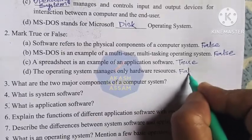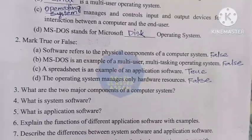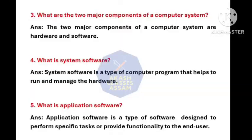Question number three: What are the two major components of a computer system? The two major components of a computer system are hardware and software.